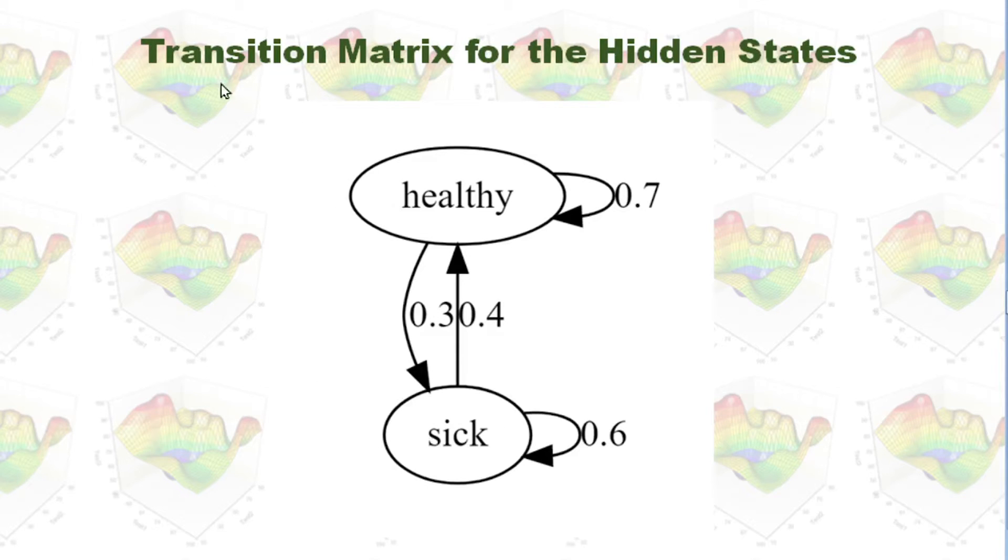We can also build a transition matrix for this lazy dog. This means after the dog is healthy, 70% probability the dog will stay healthy, but 30% probability he will get sick.